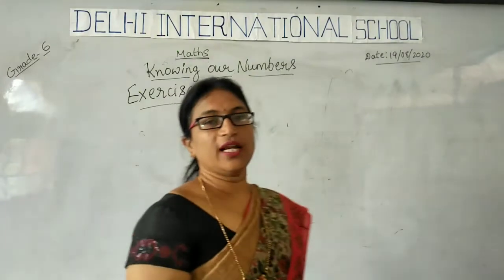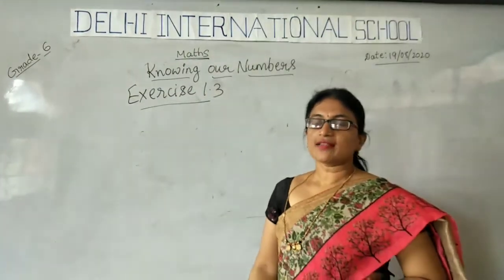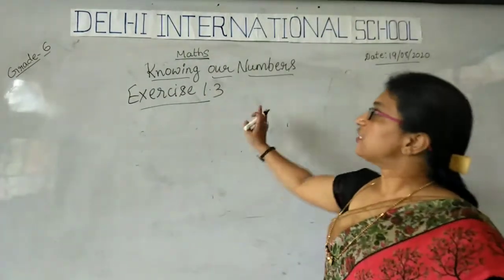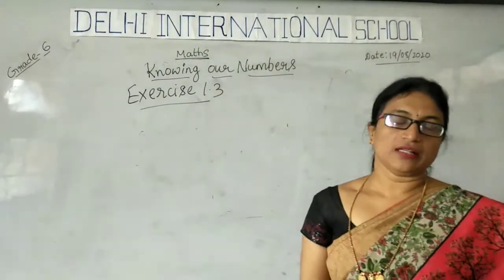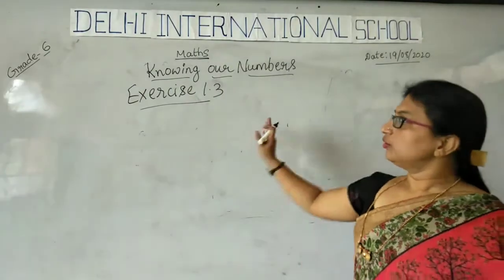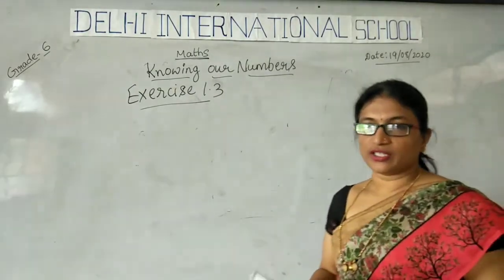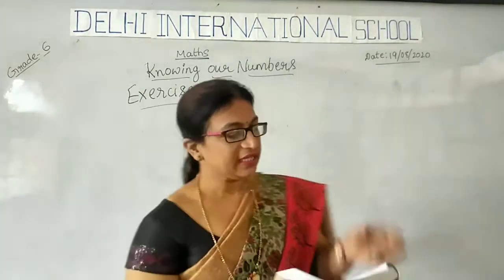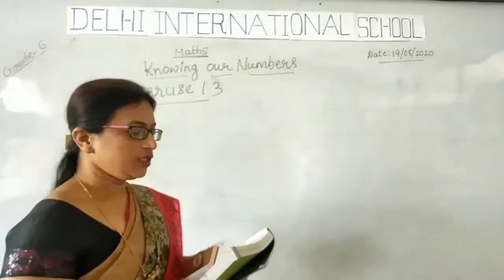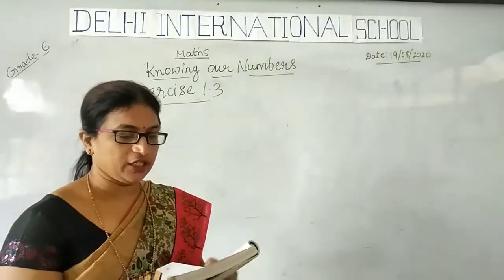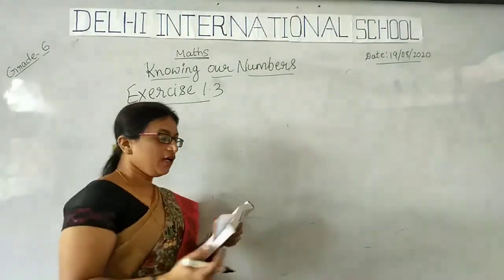Good morning dear students. Hope you are all going good. So let us continue the chapter 'Knowing Our Numbers.' We have to start Exercise 1.3. The first way is to estimate each of the following using the general rule.